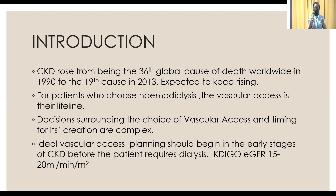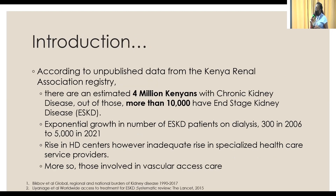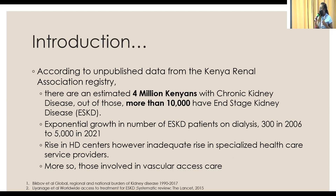The decisions surrounding the choice of vascular access and timing for its creation are very complex. Ideal vascular access planning should begin in the early stages of CKD before the patient requires dialysis — according to the latest KDOQI guidelines, at a GFR of 15 to 20. According to unpublished data from the Kenya Renal Association Registry, there are an estimated 4 million Kenyans with CKD, and more than 10,000 have end-stage kidney disease. There's been exponential growth in patients on dialysis — 300 in 2006, and 5,000 as of recently — with a rise in hemodialysis centers, but an inadequate rise in healthcare workers specialized in nephrology services, especially those involved in vascular access care.